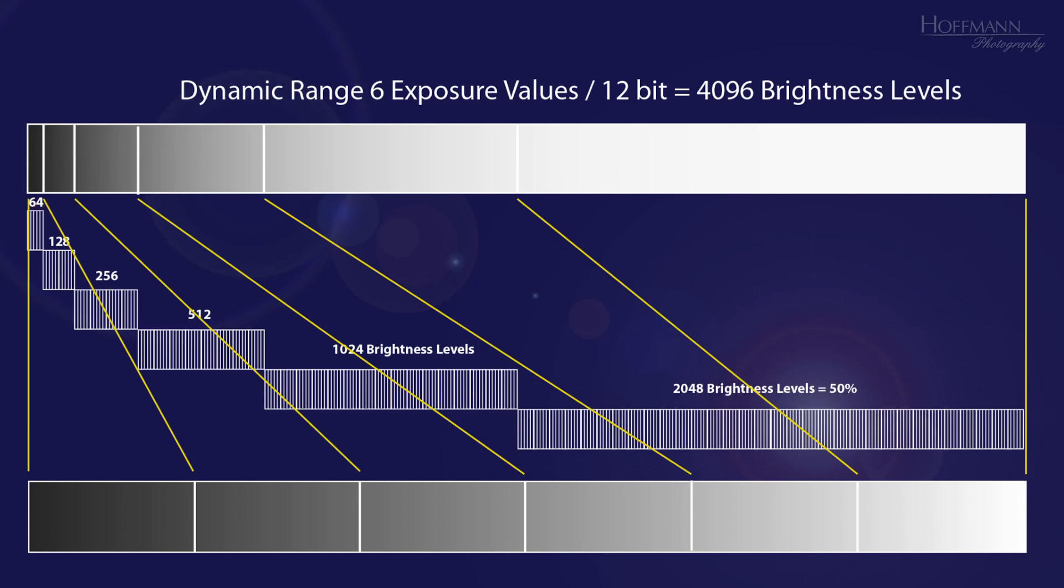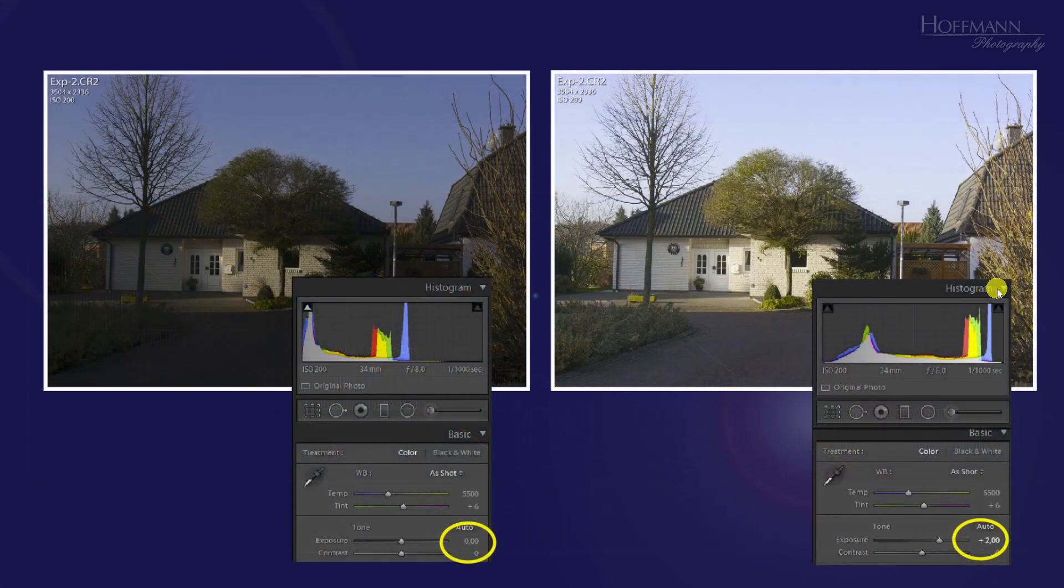To understand this better, let's look at some real-world examples. I exposed the photo on the left deliberately too dark by two exposure values. In the histogram, the brightest tonal values are missing. On the right is the same photo, but I increased the exposure in Lightroom by two exposure values. The photo looks okay and the histogram is just fine. But let's find out what we actually did.